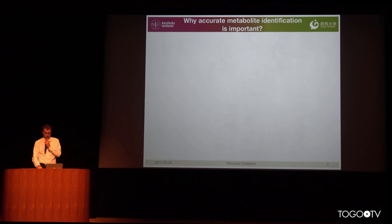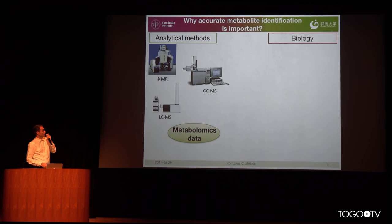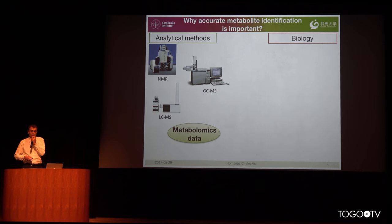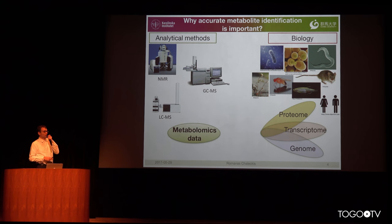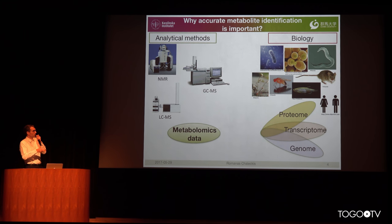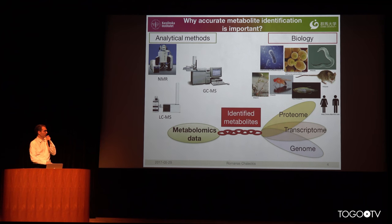Why is accurate metabolite identification important? As many speakers have noted, we have analytical methods and get raw data from machines. In metabolomics it can be NMR or mass spectrometry. But what we actually want is not more data — we want to understand biology and link data from various omics together.